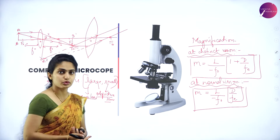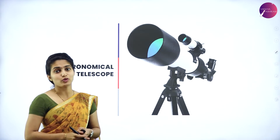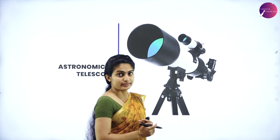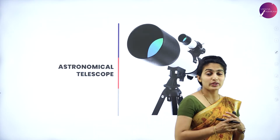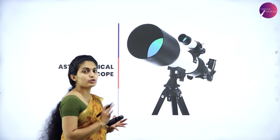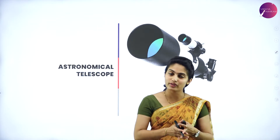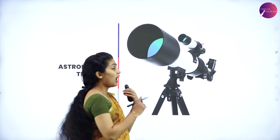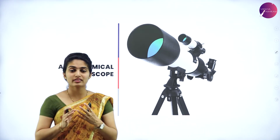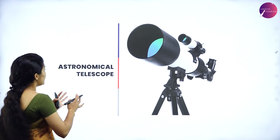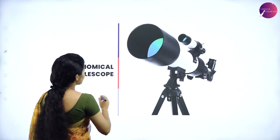Next we move to the astronomical telescope — the kind used during eclipses to observe heavenly bodies like stars, the sun, and planets. The astronomical telescope is used only for observing these celestial objects.